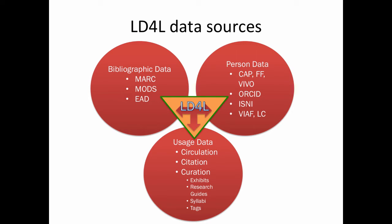Here's a summary of the kinds of data sources we have: bibliographic data — MARC records, some MODS, EAD, and others. Person data from the Common Academic Profile (CAP), Nevo, and Faculty Finder at Harvard, ORCID, Research IDs, and ISNIs. And usage data — this is stuff that doesn't get incorporated much into existing catalog records. It can include curation data like whether something has been selected for an exhibit, mentioned in a research guide, included in a syllabus, or subject to more arbitrary tagging.